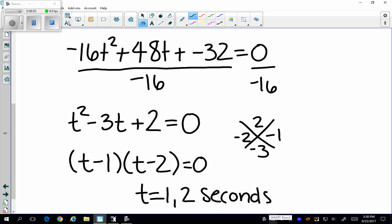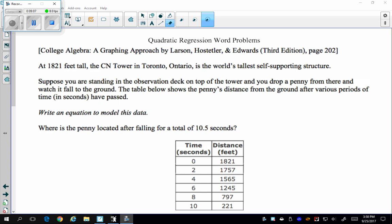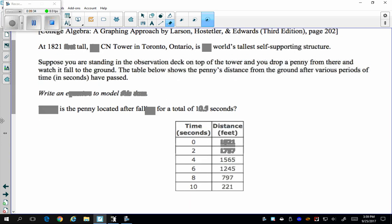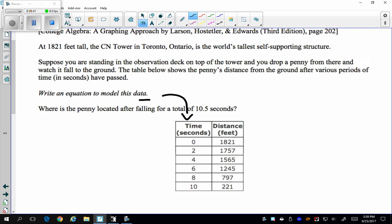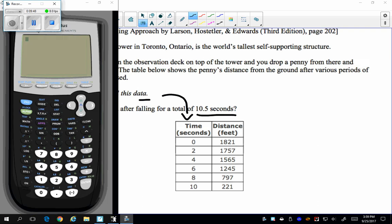My last problem is quadratic regression. In this, I'm going to want to use my calculator especially before. So at 821 feet, the CN Tower is one of the world's tallest self-supporting structures. So I'm standing at the top of the tower and I drop a penny from there and it falls to the ground. The table shows me the time and the distance at which the penny is falling. So I want to create the equation that is going to model the data within this table. And then I'm going to try to find where was the penny located after falling 10.5 seconds. I'm going to go to my calculator and I'm going to go to my stat button, which is right under the list. So I'm going to go to edit.